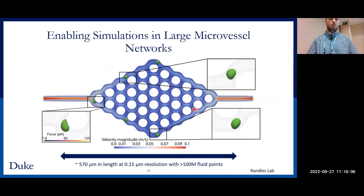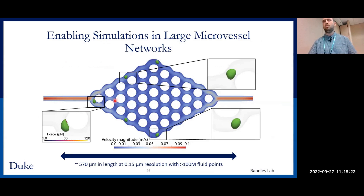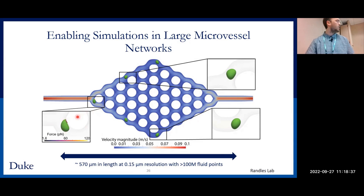To show how our hybrid parallel scheme enables adhesive dynamic simulations on larger geometries, we performed a simulation of several adhesive cells on a large microvascular network — which could represent a microfluidic device for sorting cells by metastatic propensity. This contained over 100 million fluid points simulated at 0.15 micron resolution. In the inset, you can see a cell forming bonds with the substrate. This served as a proof of concept that we can apply these methods to larger scale problems.